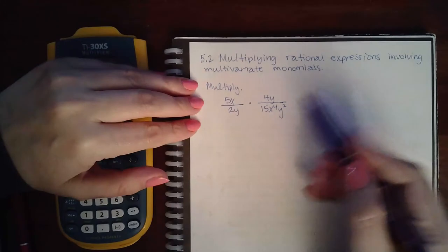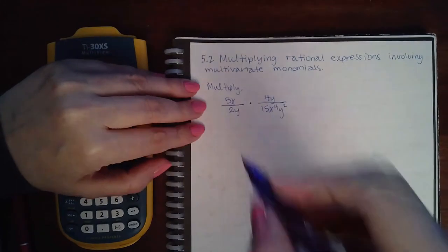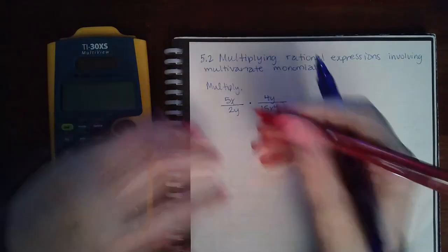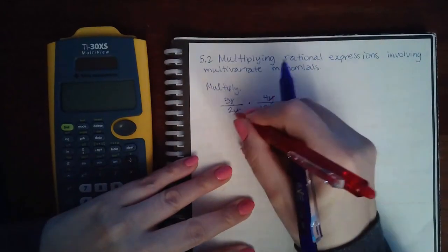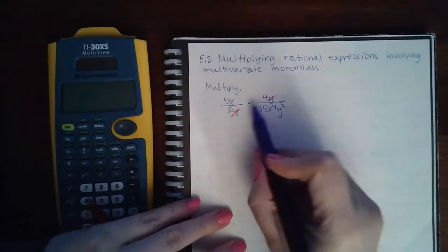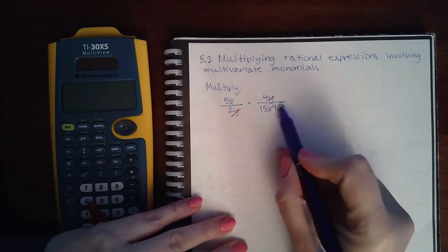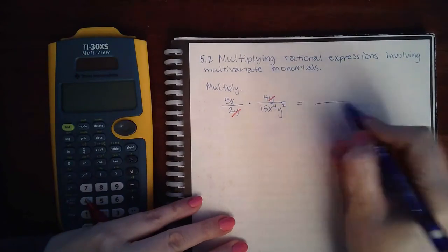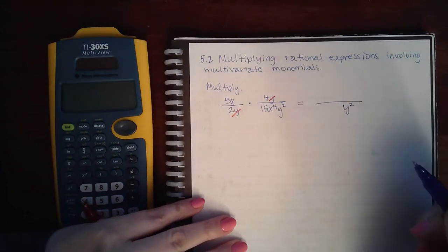So I see a y in the numerator and a y here. So this y can reduce with that y. But what that means is that there's no other y's in the numerator to reduce with this one. So that y squared will still remain in the denominator.